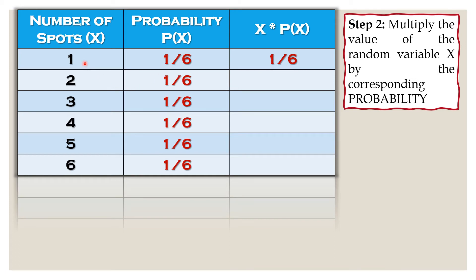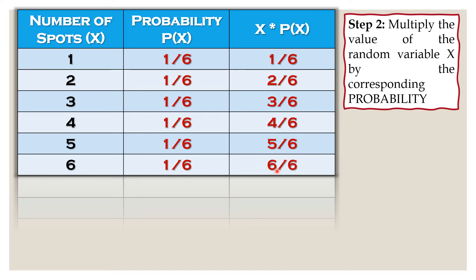In multiplying whole numbers to fractions, all we need to do is simply multiply the whole number to the numerator and copy the denominator. Next, two times one over six: two times one is two, copy the denominator six, giving two over six. I haven't simplified it yet to its lowest term since it will be useful in our next step. Three times one over six gives three over six. Four times one over six is four over six. Five times one over six: five times one is five, copy six as the denominator, giving five over six. And six times one over six gives six over six. We're done with step number two.